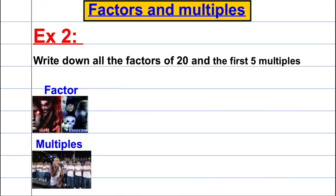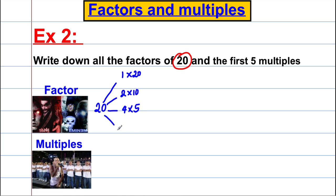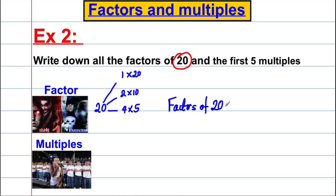Example 2: write down all the factors of 20. Start with 1×20. Can 2 work? Yes: 2×10. Can 3? No. Can 4? Yes: 4×5. Can 5? Yes, but 5×4 is the same as 4×5 — already got it. Once we start repeating, all others will be repeats too. So the factors of 20 are: 1, 2, 4, 5, 10, and 20.